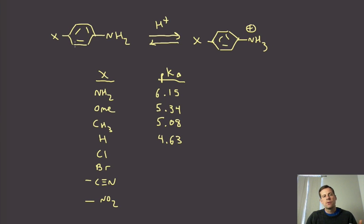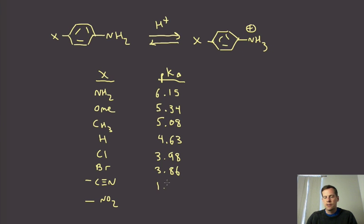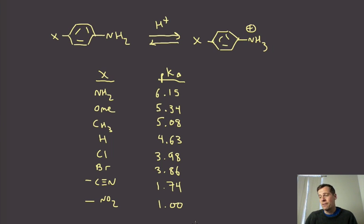As we add electron-withdrawing groups, we start to acidify these ammoniums, and the pKa starts to go down quite far. When you've got para-nitroaniline, you've got a conjugate acid with a pKa of 1, which actually makes it a very strong acid. So that's a little bit about the lone pair of amines and how it can be affected by substitution patterns.